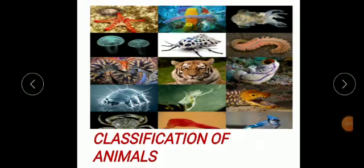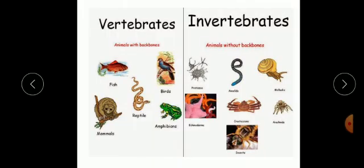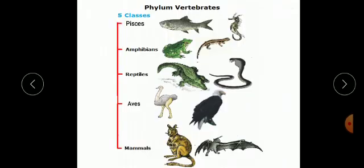Students, welcome back to biology class. We are discussing chapter classification of animals. Till now we have discussed that animal kingdom can be split up into two main groups: vertebrates and invertebrates. Animals with backbones are called vertebrates, while animals without backbones are called invertebrates.